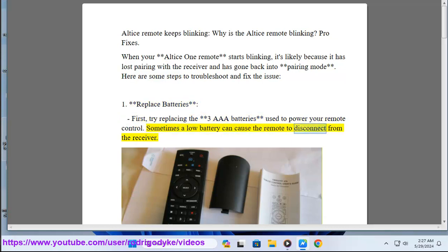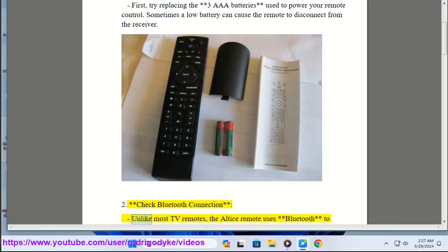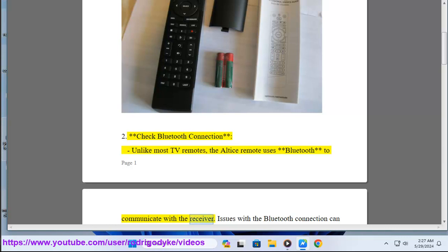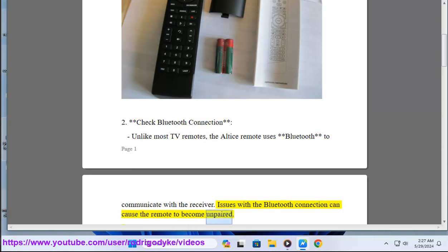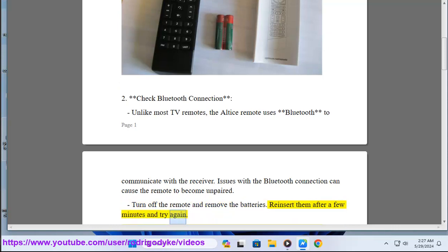2. Check Bluetooth connection: Unlike most TV remotes, the Altis remote uses Bluetooth to communicate with the receiver. Issues with the Bluetooth connection can cause the remote to become unpaired. Turn off the remote and remove the batteries. Reinsert them after a few minutes and try again.